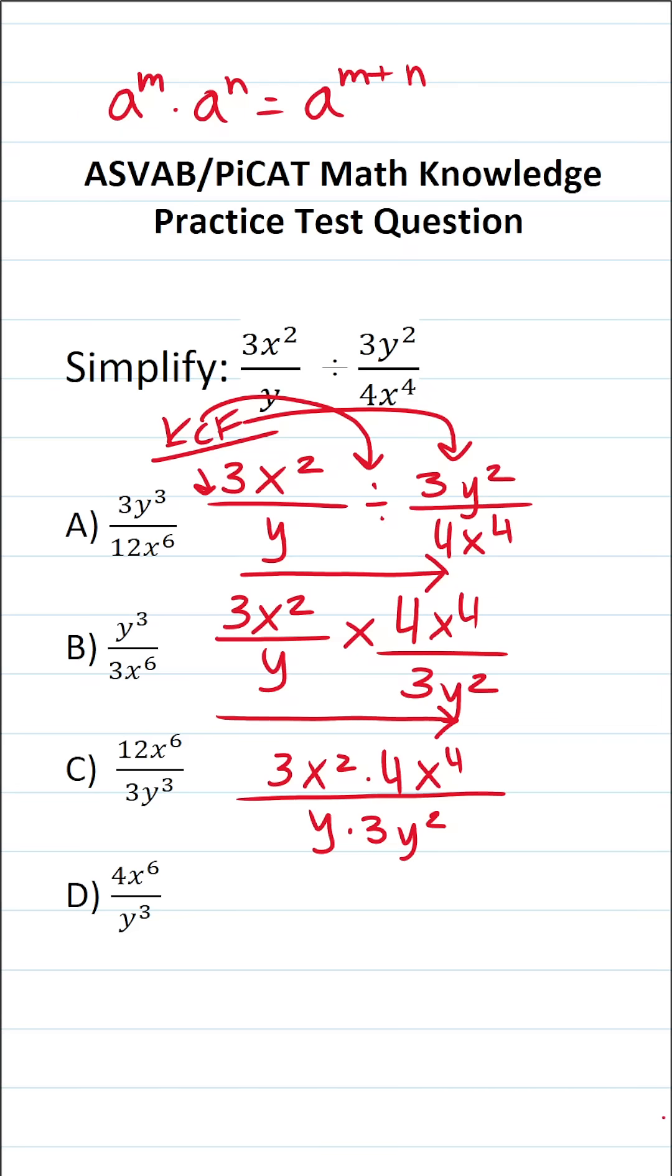Alright so let's simplify our numerator. 3 times 4 is 12. Now we have x squared times x to the fourth. According to the product rule this becomes x to the 2 plus 4 which is x to the sixth power.